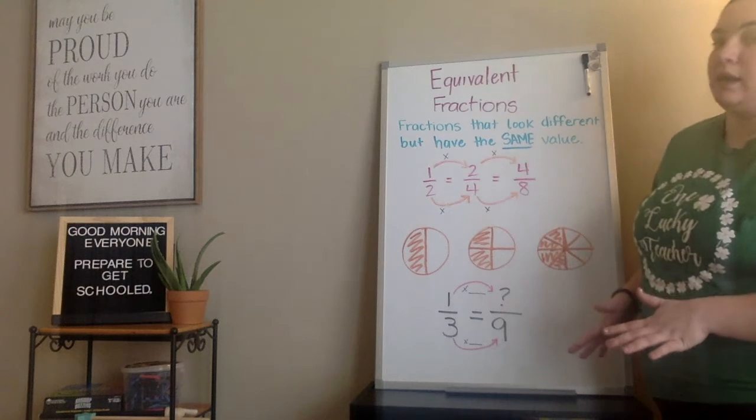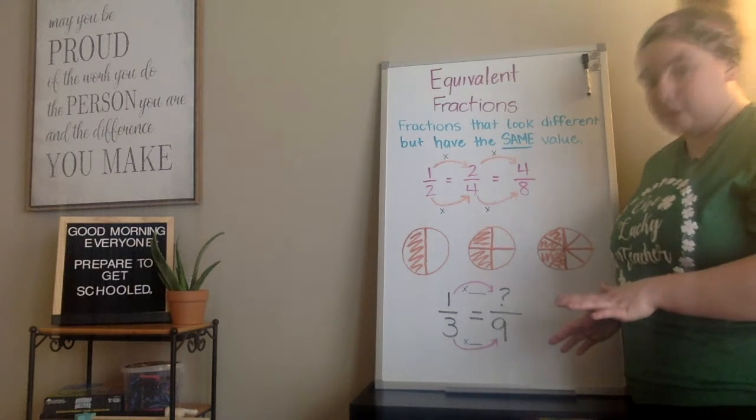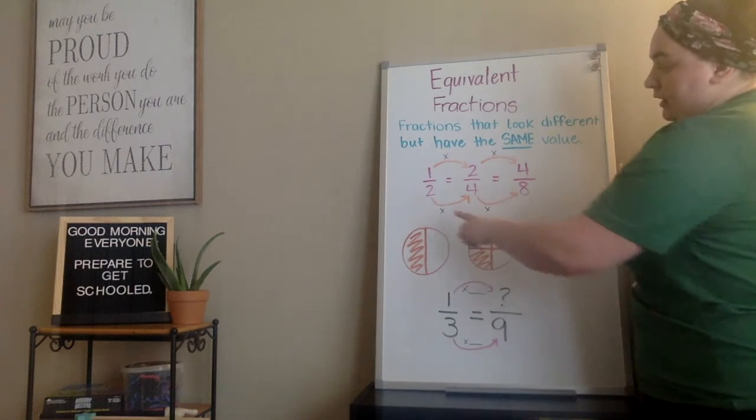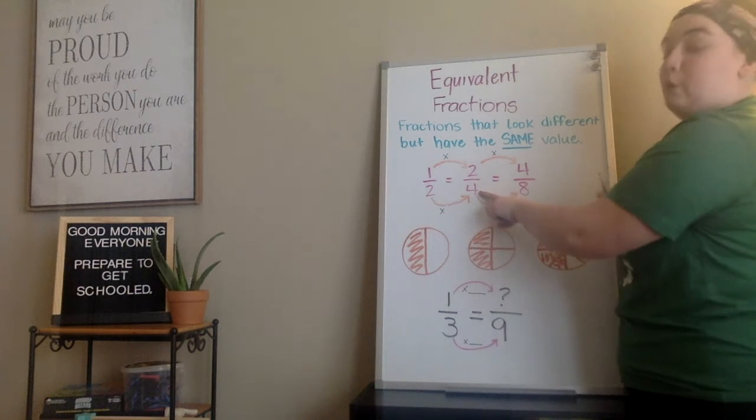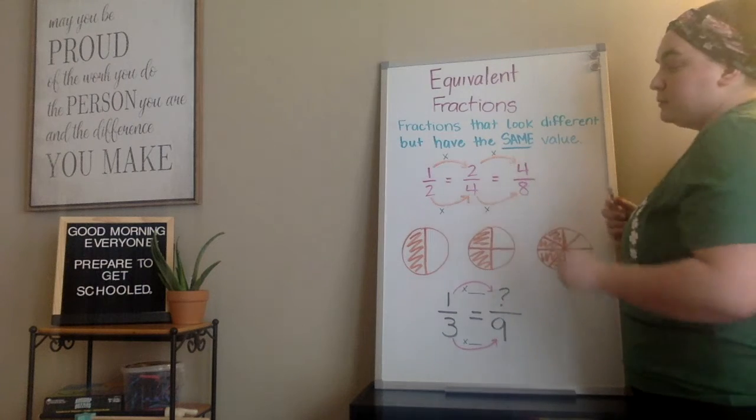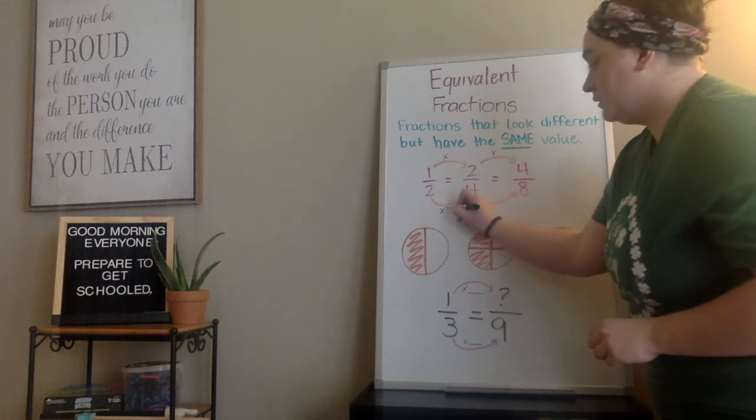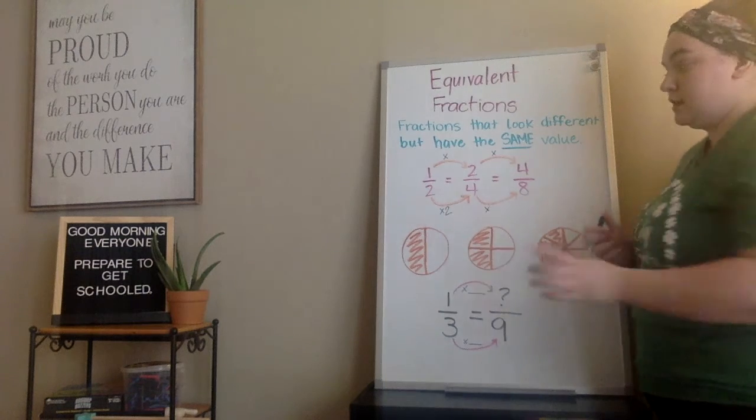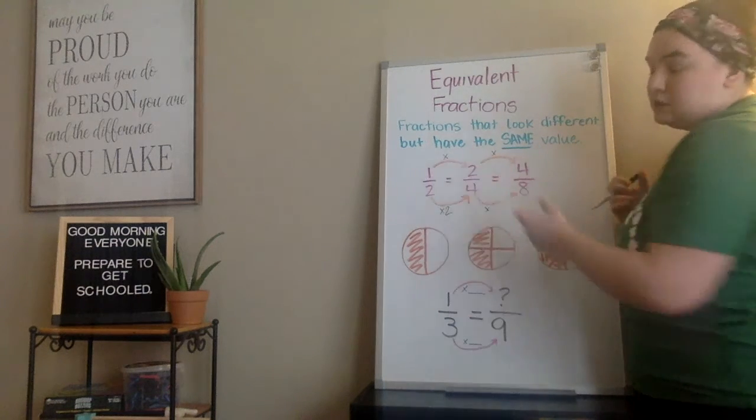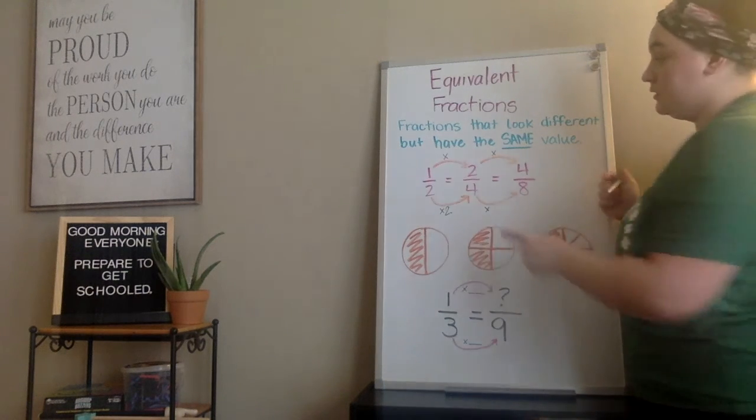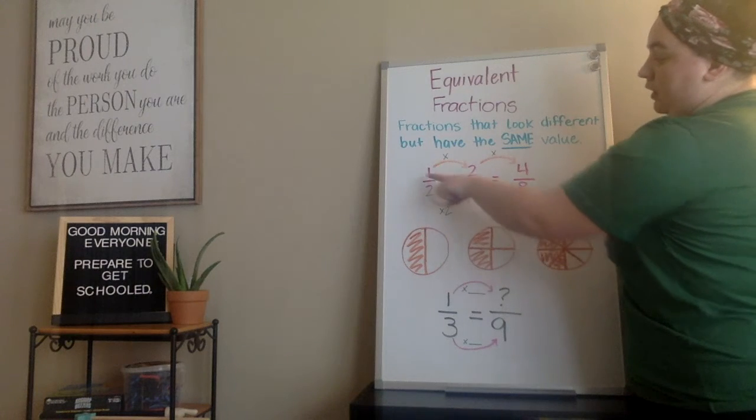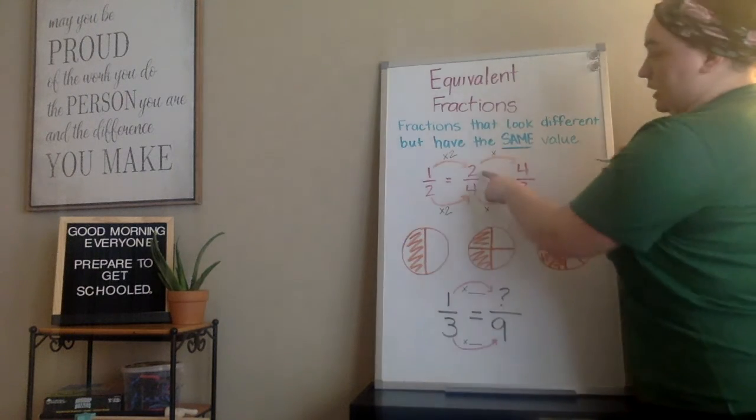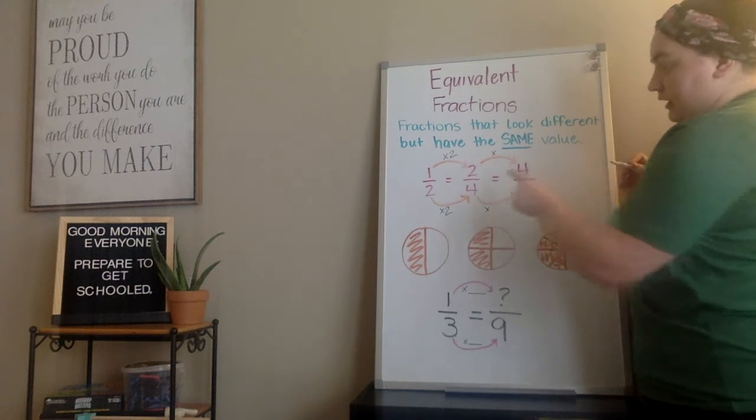Same thing for four eighths. If I had eight sections and I represent only four of them by coloring them in, it's the same value as one half and two fourths. So the pictures are great and all, but we have to have some kind of numerical way to get there. So let's take a look. If I multiply something times two, I should get four. And if I multiply two times two, I get four. General rule for fractions. Anything you do to the bottom, you should do to the top as well. So if I multiply two times two to get four, I can multiply one times two to get my two.